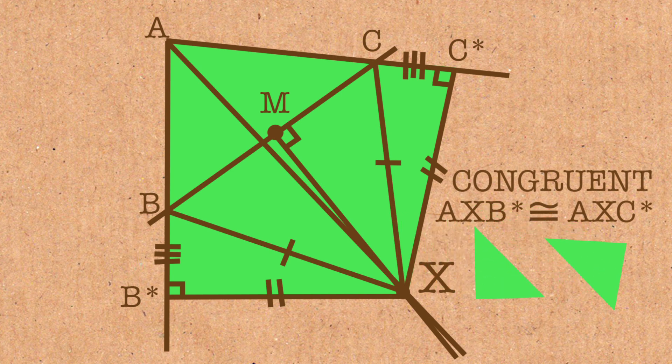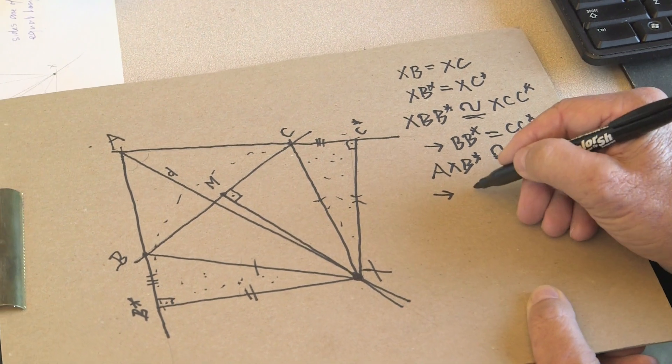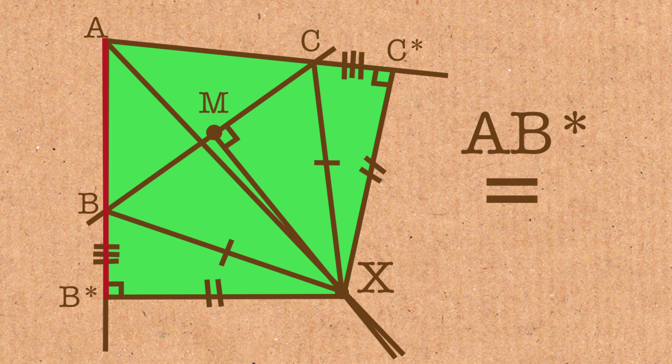And this, of course, tells us that AB star equals AC star.